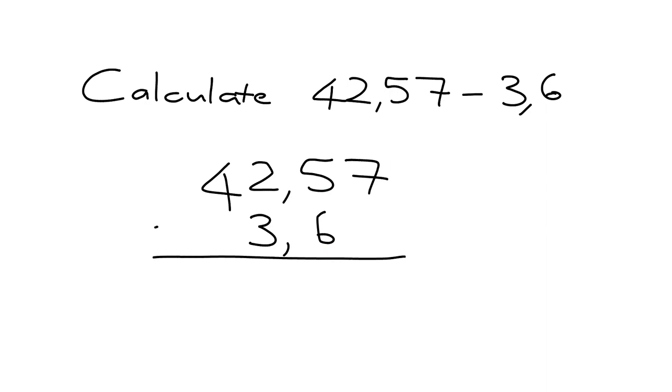Once I've done that, my subtraction is simple. What I say here is I've got 7 and there's nothing here in the hundredths place. So 7 minus 0, I get 7.